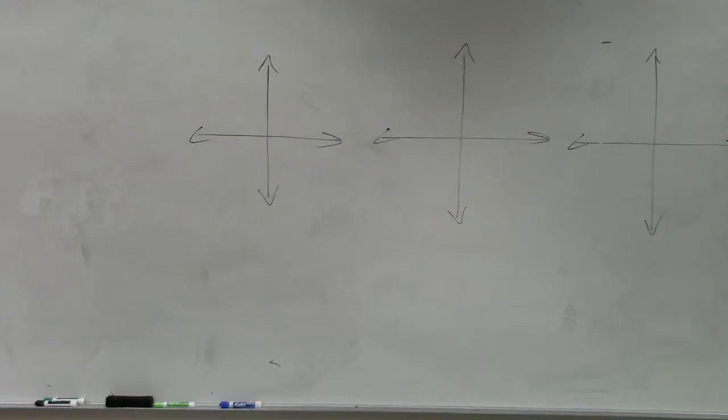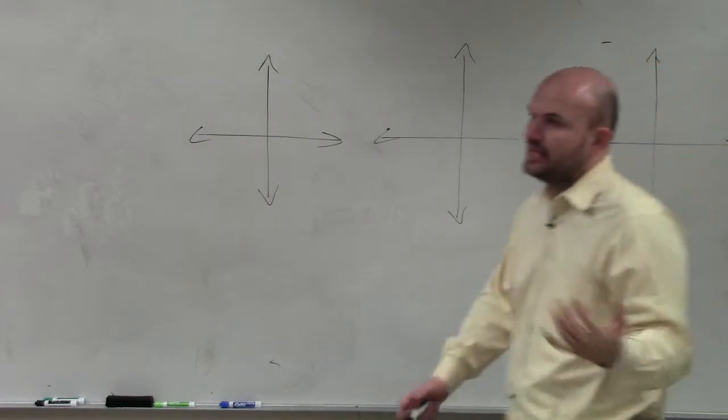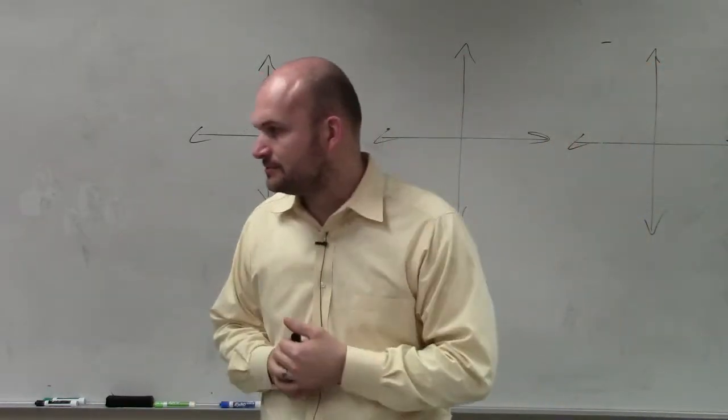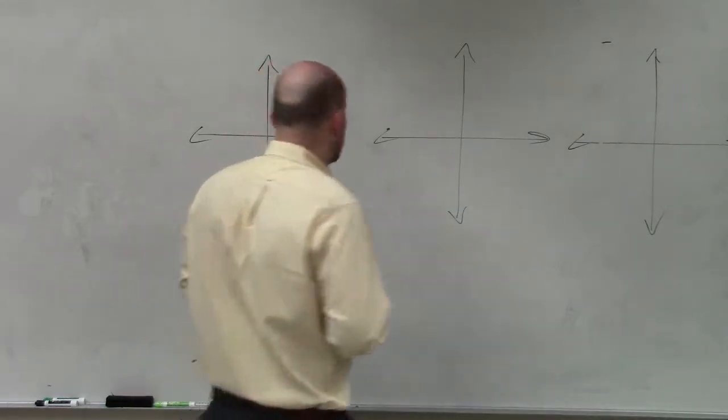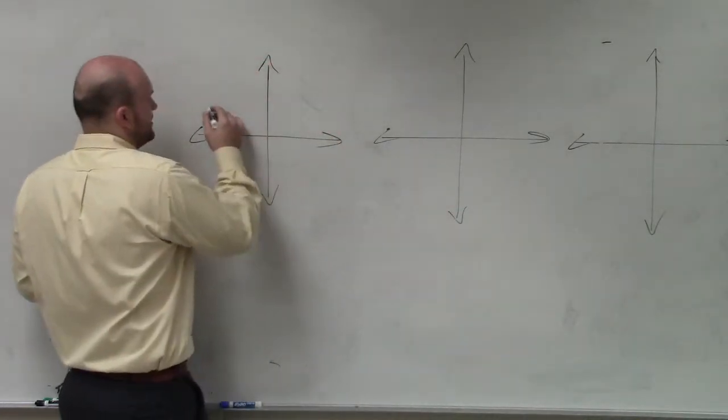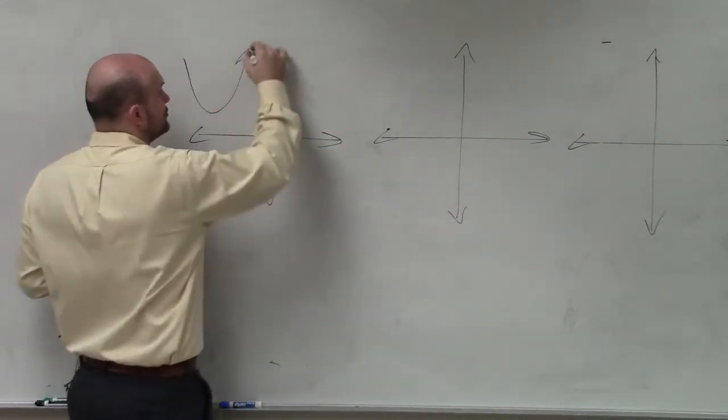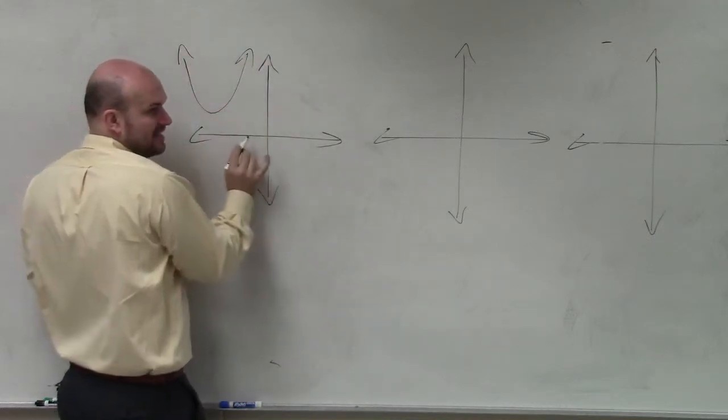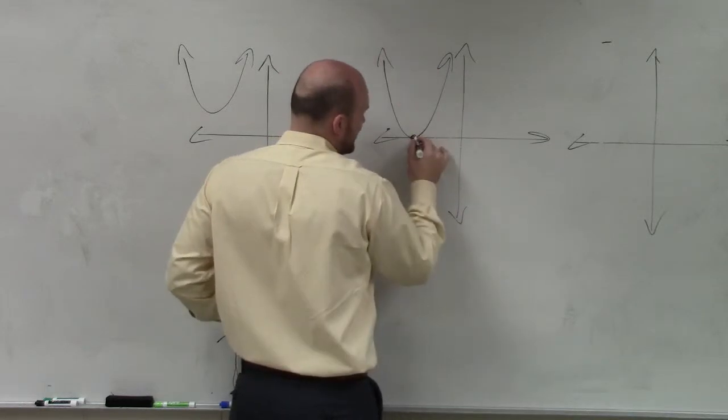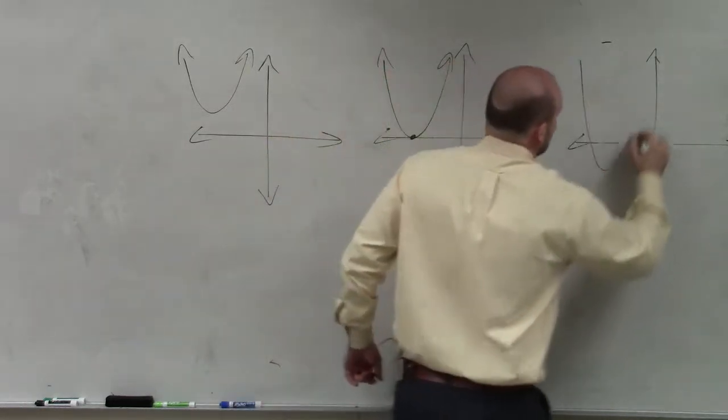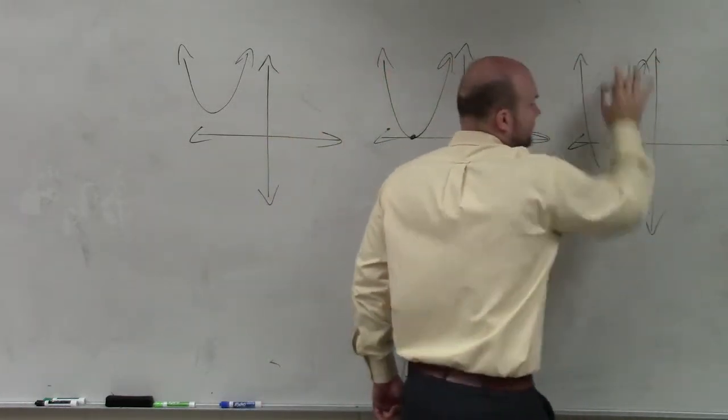At the beginning of this chapter, one of the first things we discussed was identifying the type of solutions of a quadratic. And what we talked about is a quadratic could have no solutions, meaning it never crosses the x-axis. It could have one solution, meaning it touches only at one spot, or it could have two solutions.